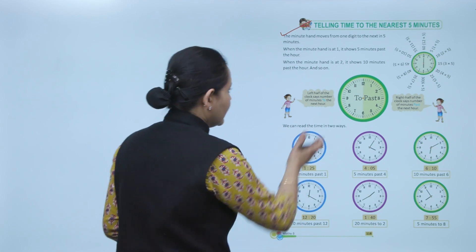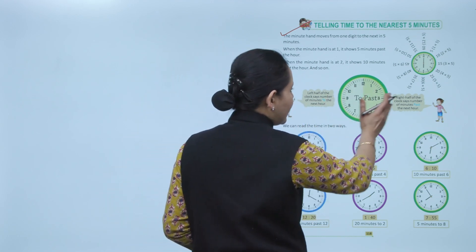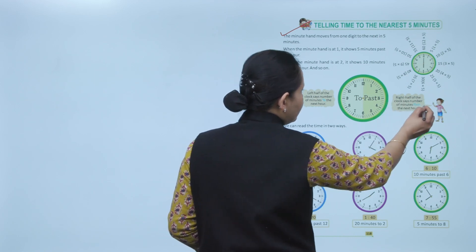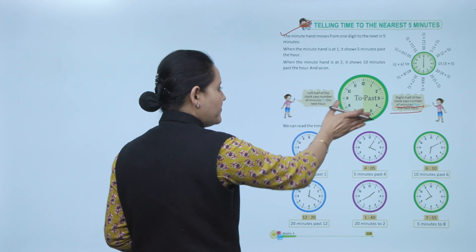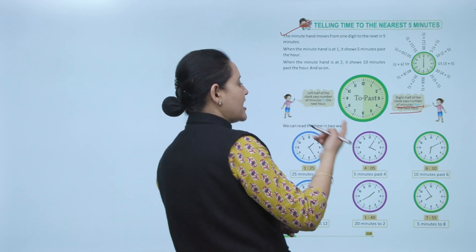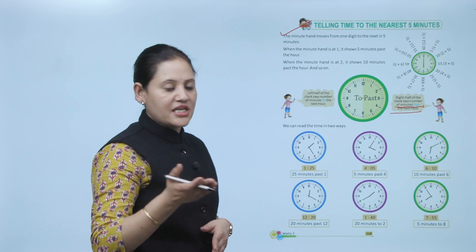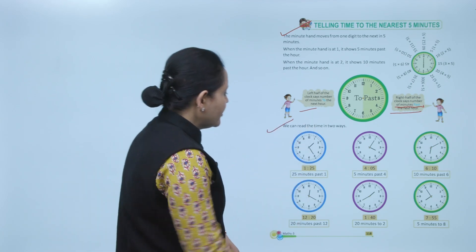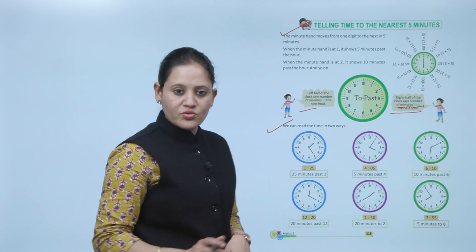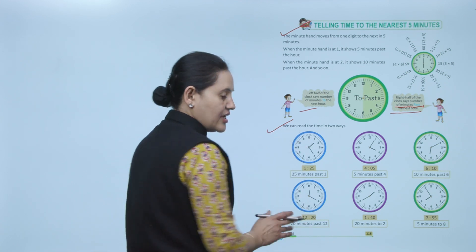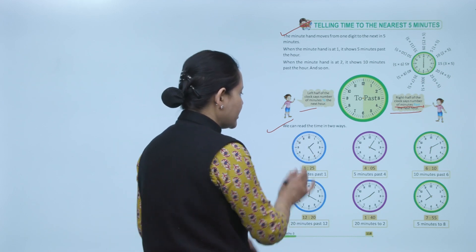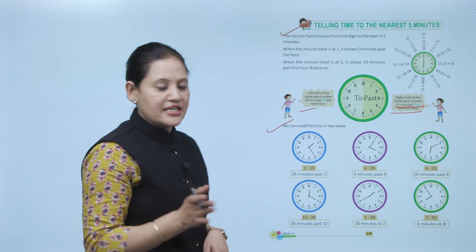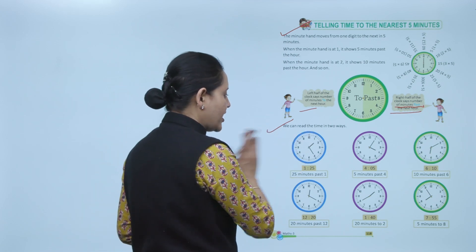The left side of the clock tells the number of minutes to the next hour, and the right side reads time past the hour. We can read time in two ways. Here the small hand is between 1 and 2, and the big hand is on 5, which means 25 minutes. So the time is 1:25 or 25 past 1.